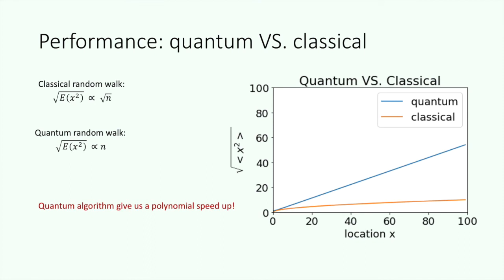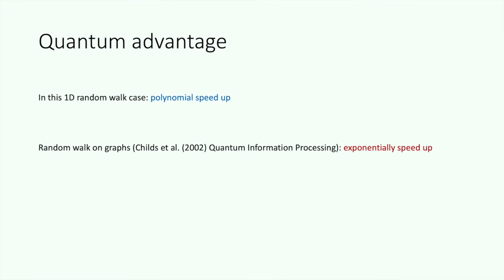Now let's look at the quantum advantage. In this simple 1D case, the quantum random walk just gives us a polynomial speedup. But in other cases, like quantum random walk on graphs, the quantum algorithm has exponential speedup.